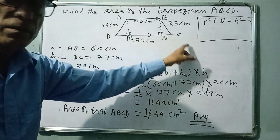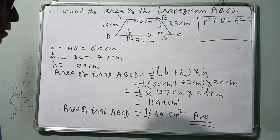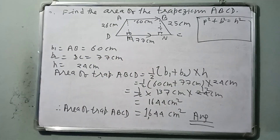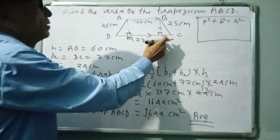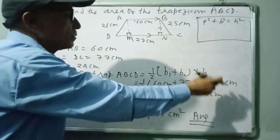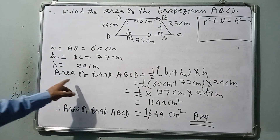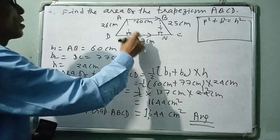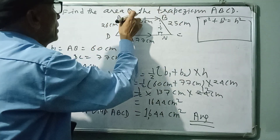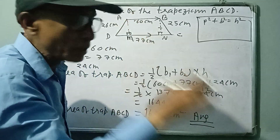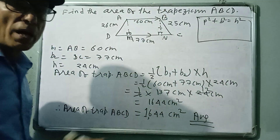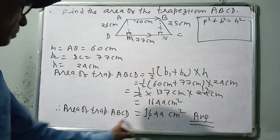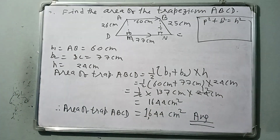In summary: drop perpendiculars, apply the Pythagoras theorem using p² = h² − b² to find NC, then find BN = 24 cm (the height). Finally apply the formula: area = ½ × sum of parallel sides × height. The height was not directly given, but the two non-parallel sides (hypotenuses) were given, from which we found NC and then BN. Area = 1644 cm². Please comment.